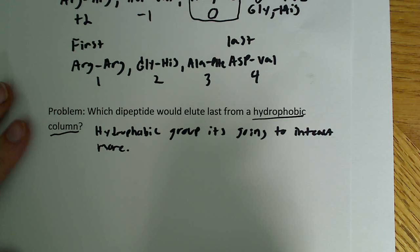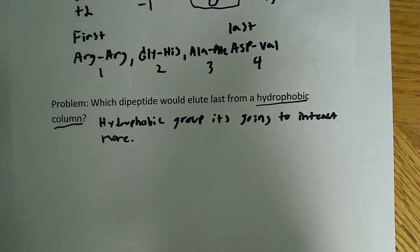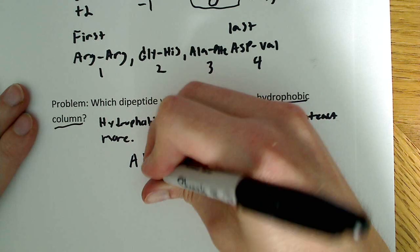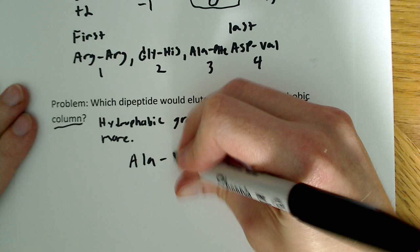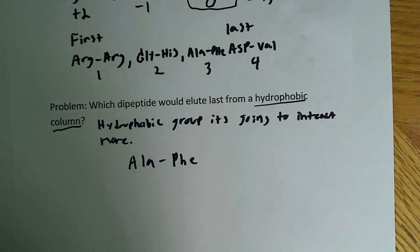All you have to do here to get this answer correct is know that a hydrophobic column binds hydrophobic groups more tightly, and then just examine which groups you have up there that are actually hydrophobic. So the answer to this one, the dipeptide that elutes last, is alanine-phenylalanine. And that's pretty much all it takes. Hopefully this helps.